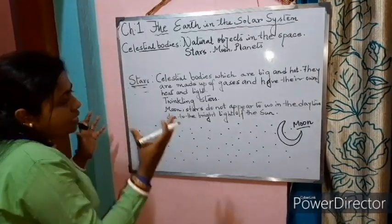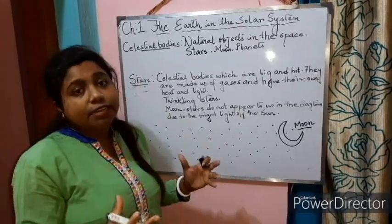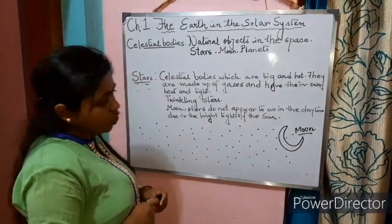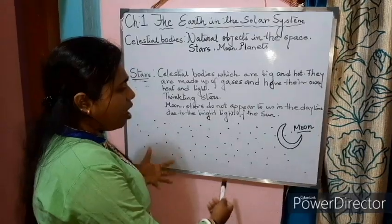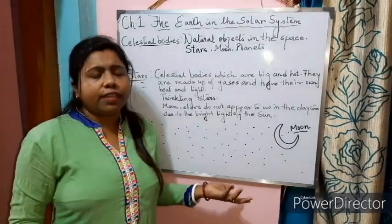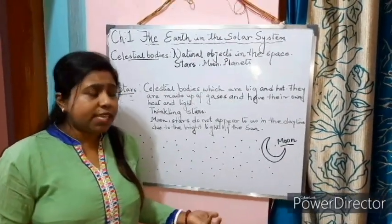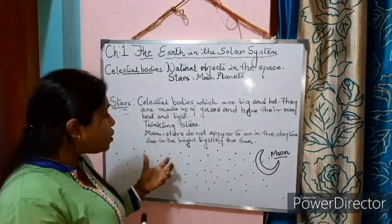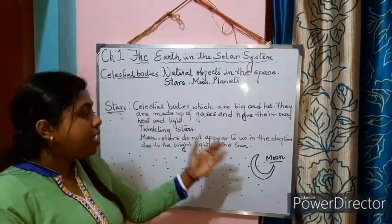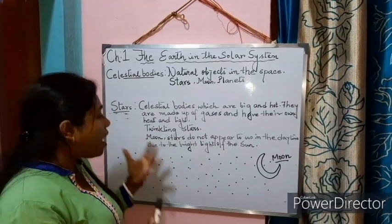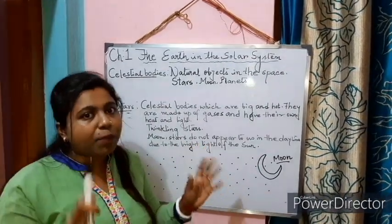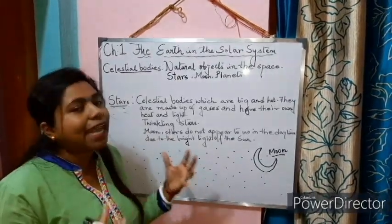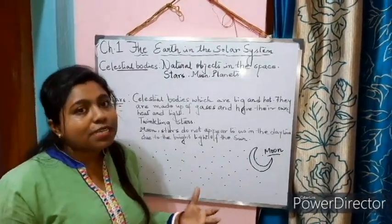These are small stars which are shining in the night sky along with the moon. You may question: why can we only see the stars and moon in the night sky? Why can't we see them during the daytime? Because of the bright light of the sun, we cannot see the stars and the moon. They do not disappear — they are there in the sky, only the bright light of the sun prevents us from seeing them.